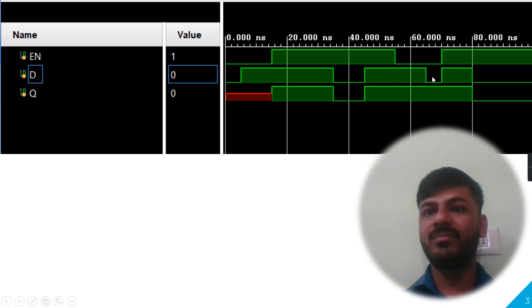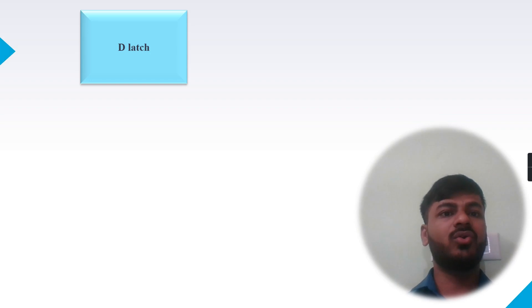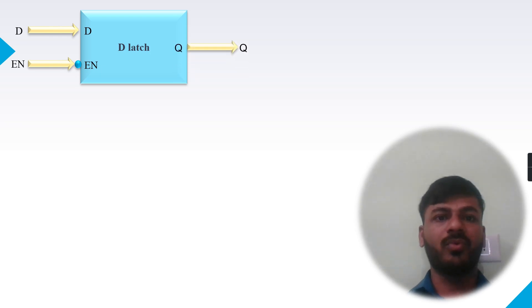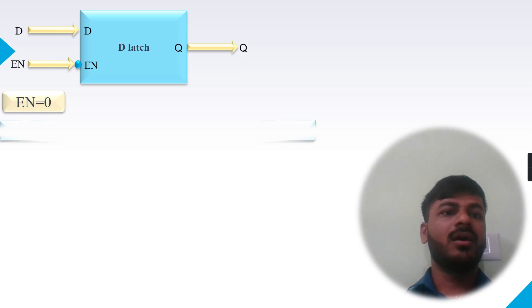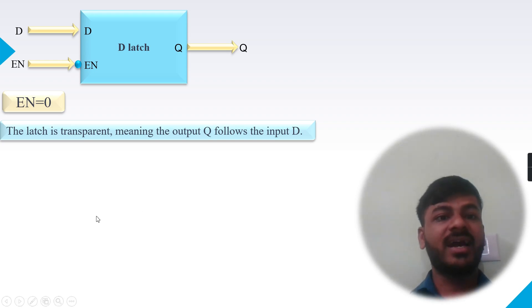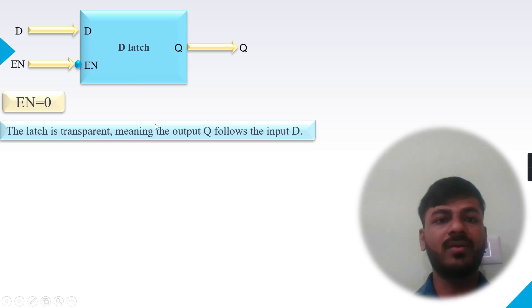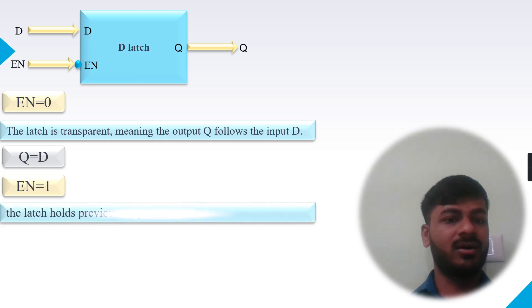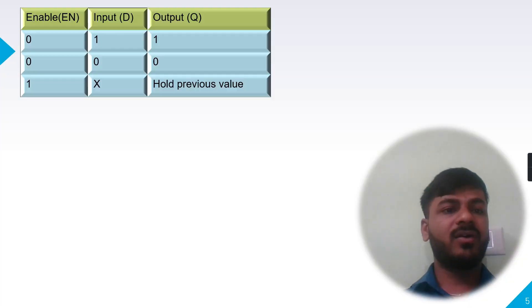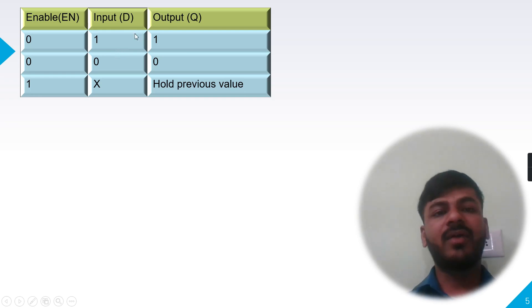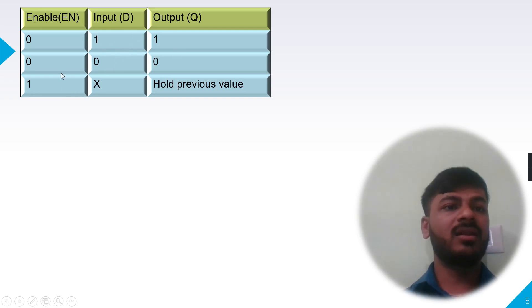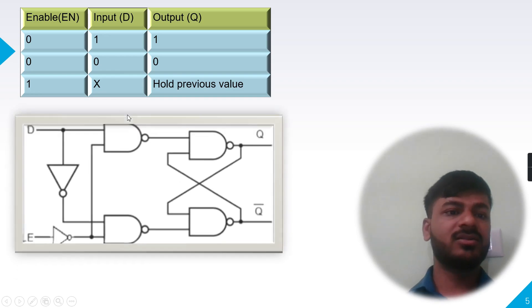When Enable goes high again, the output also goes high. Now for the negative level sensitive D latch — it also has the same inputs D and Enable with one output Q, but the functionality is reversed. When Enable is zero, the latch acts as a transfer, meaning the output follows the input D and holds the current value. When Enable is high, the latch holds the previous output. In the truth table, when Enable is zero the latch holds the current value of D, and when Enable is high it holds the previous value.